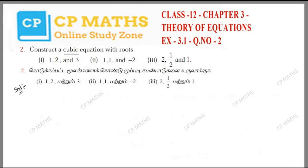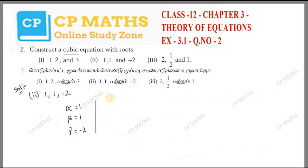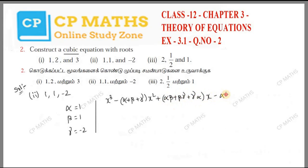Now let's take the second sum. The roots are alpha equals 1, beta equals 1, gamma equals minus 2. The formula is: x³ minus (α + β + γ)x² plus (αβ + βγ + γα)x minus αβγ equals 0.